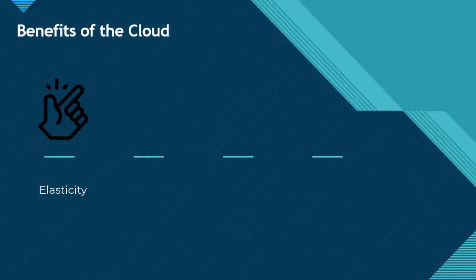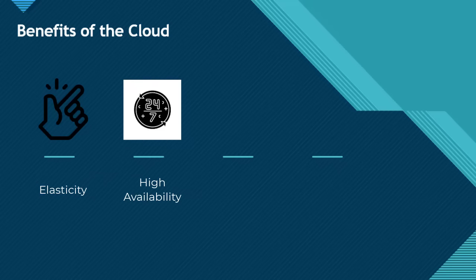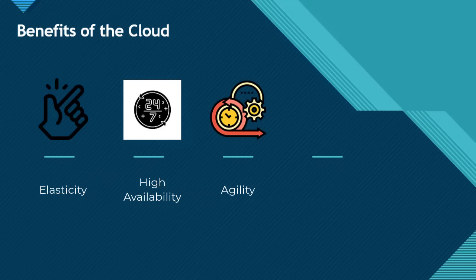Another advantage is high availability. When you are deploying an application or a service, you need to ensure that the resources are available as and when needed. High availability ensures the maximum availability of your resources in the event that there is a disruption. You can also build high availability on-premises, but it's about the cost of setting it up compared to what we have in the cloud. Another advantage is agility. With on-premises, rolling out an IT service usually takes time, whereas in the cloud the process is a lot quicker. If you need a resource in the cloud, you're able to allocate it quickly, and if you no longer have a need for that resource, you can also quickly deallocate it.